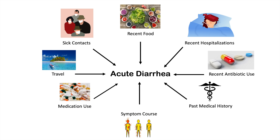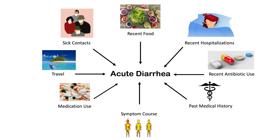Another category we look at is medication use. While we've already talked about antibiotic use, medication use here is more specific to laxatives. Have they been taking or abusing laxatives to a point where they're getting acute diarrhea? That could easily explain why they're having diarrhea in the first place. Looking at all these different factors can help us determine the cause of the acute diarrhea.